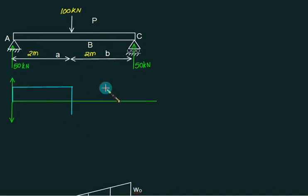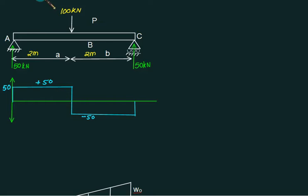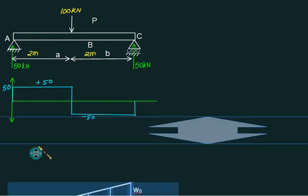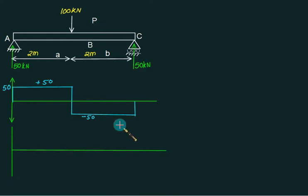From the center point to C there is no load, so no area under the load diagram, meaning shear force remains constant. Finally we close at 50, so this is 50 kN and this is minus 50 kN. Above area is taken as positive and below is taken as negative. Now we will construct the BMD diagram — this line represents zero BMD.